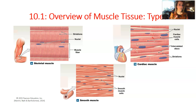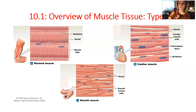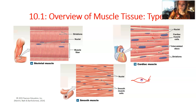Skeletal muscle cells are long and straight. Cardiac muscle cells are highly branched. Smooth muscle cells have a spindle shape — tapered at both ends, like somebody pinched them together, with the nucleus sitting in the middle.